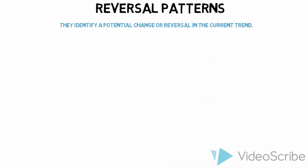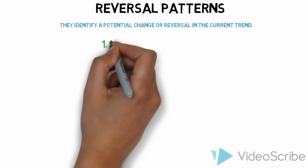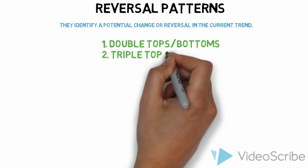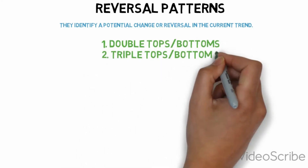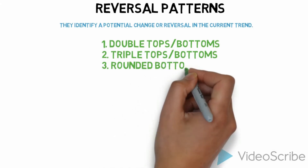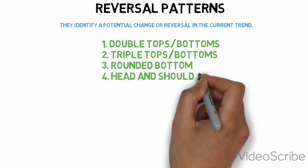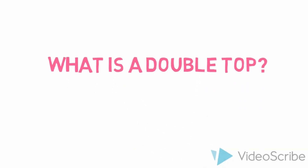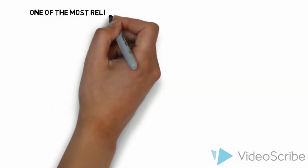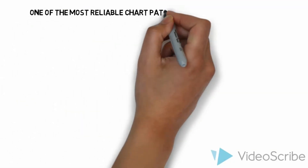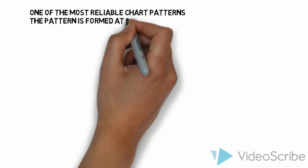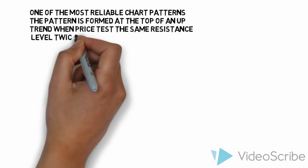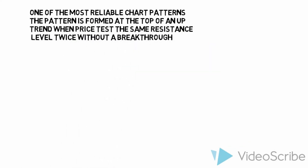If you need a refresher on trend recognition, click the link at the top. We will cover double tops and bottoms, triple tops and bottoms, rounded bottoms and U-shaped patterns, and head and shoulder patterns. So what is a double top? It's quite simple — it's one of the most reliable chart patterns. The pattern is formed at the top of an uptrend when price tests the same resistance level twice without a breakthrough.